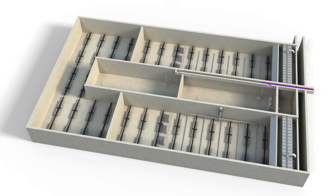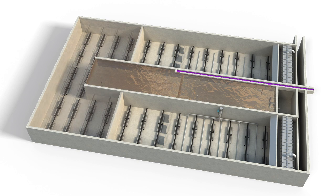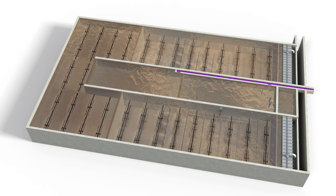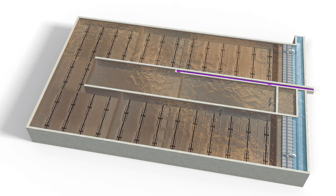The influent distribution system consists of an influent channel and a distribution weir. After sewage flows through the channel, it is split into the anoxic and anaerobic cells.